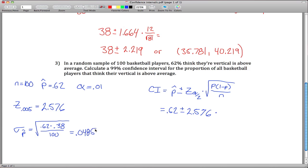And if you multiply that by 2.576, our critical value, what you get is that our confidence interval is 62% plus or minus .1250. You can leave your answer like that or you can write it as an interval .495 all the way up to .745. So our confidence interval here is between 49.5% and 74.5%.